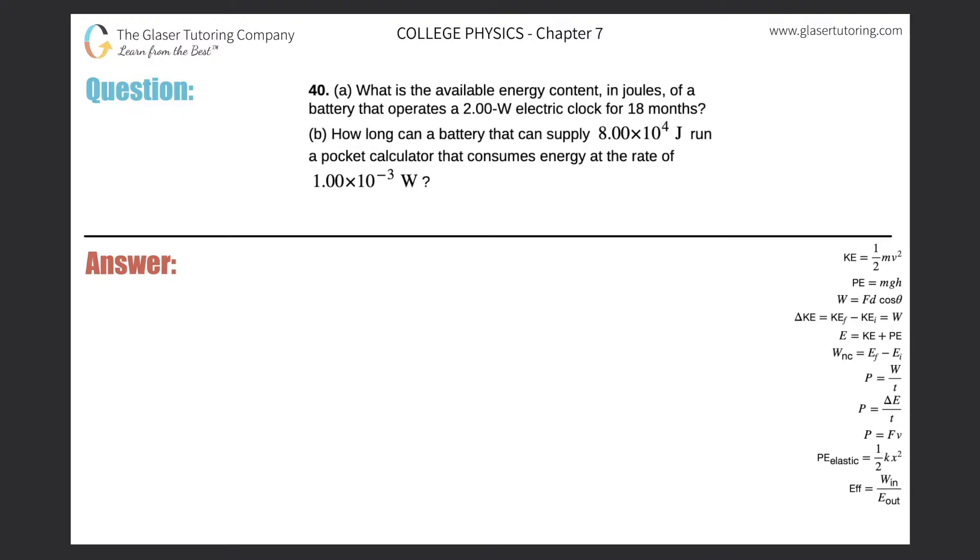Number 40, letter A: What is the available energy content in joules of a battery that operates a 2-watt electric clock for 18 months? Alright, so let's write letter A over here. Basically, what we need to do is calculate energy.